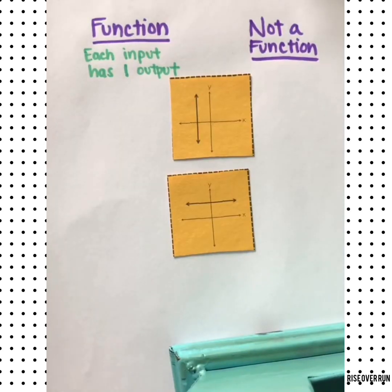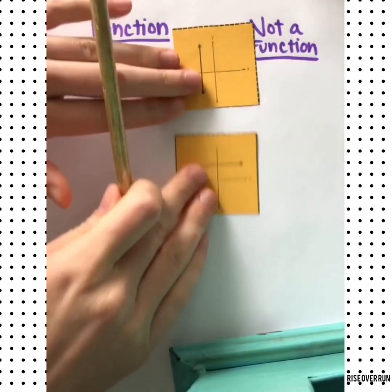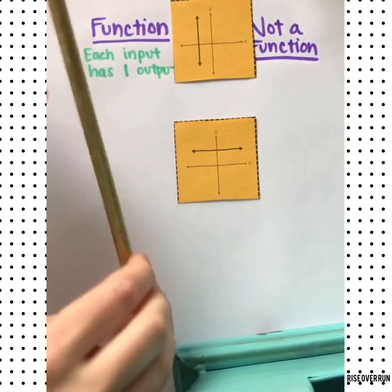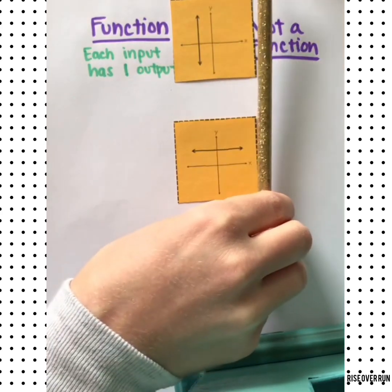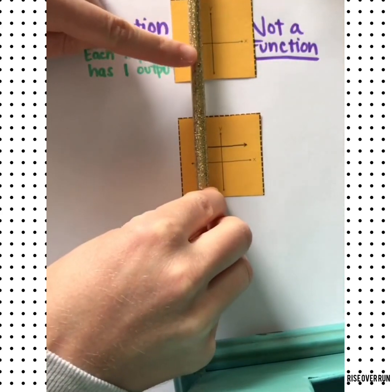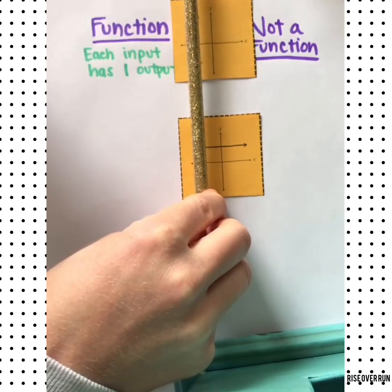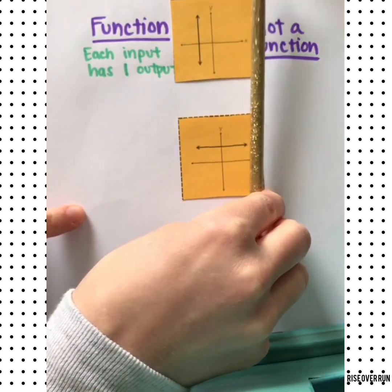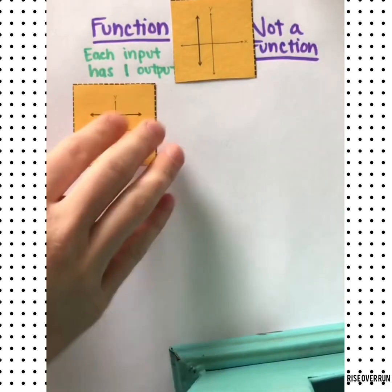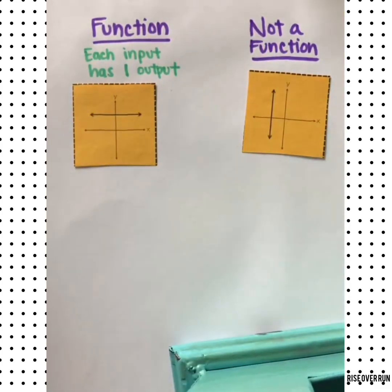One of these is a function and one isn't. Let's try a vertical line test. Can you see up here how it's hitting lots of points at the same time? And down here, it only hits one point at a time as it moves across. That means that's a function and that's not a function.